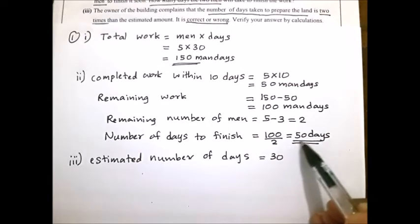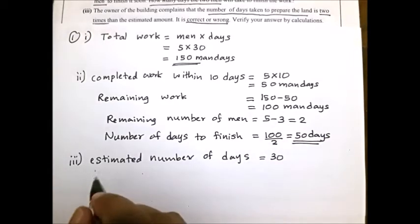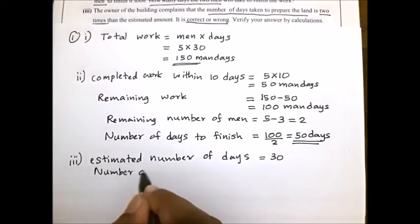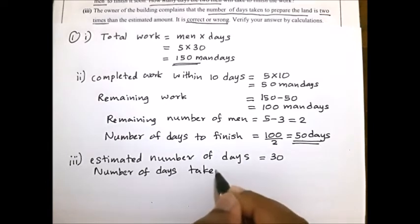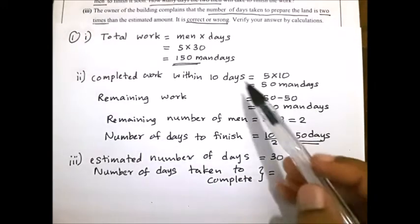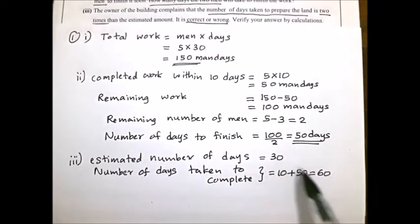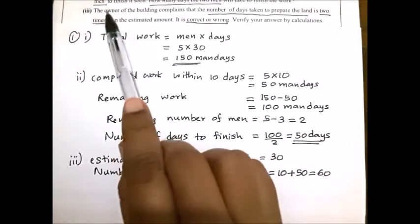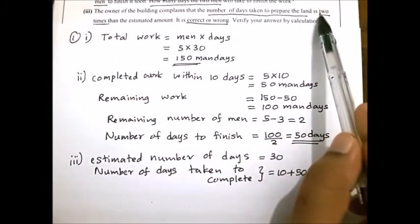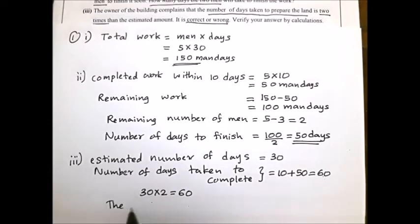They take 50 days to complete it. So the total number of days taken to complete this work is 10 plus 50. Here 10 days and here another 50 days, total 60 days. What is the relationship between these two? 30 multiplied by 2 equals 60. So the statement of the owner is correct — he says it is 2 times the estimated amount. 30 multiplied by 2 equals 60, the statement is correct.